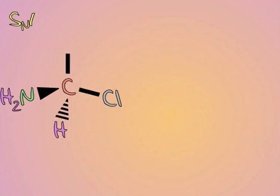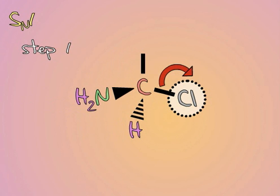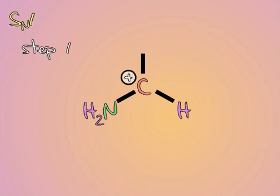SN1 reactions are the first type of substitution reaction we can discuss. They are two-step reactions. First, a leaving group leaves the substrate, taking its electrons and forming a carbocation.